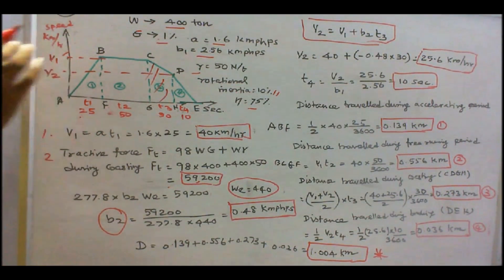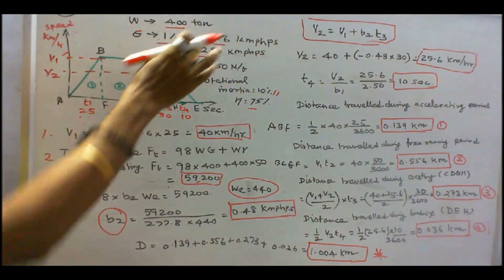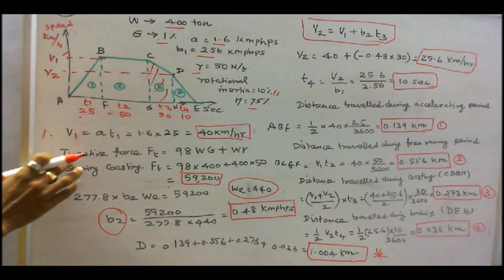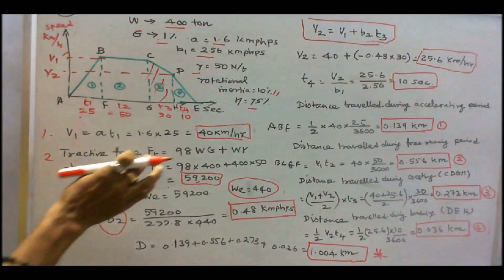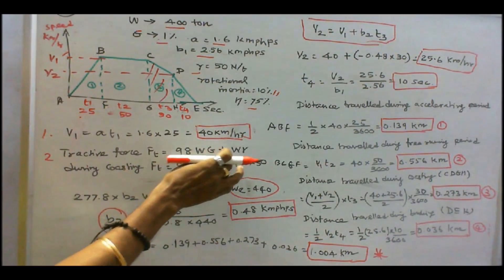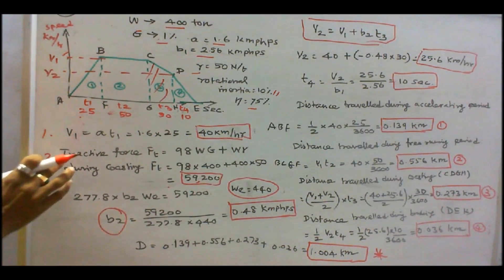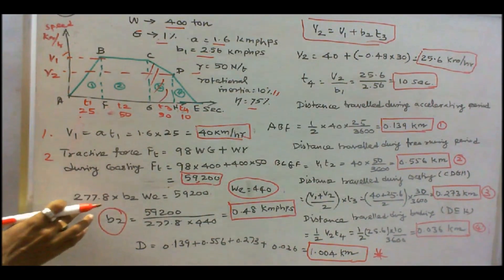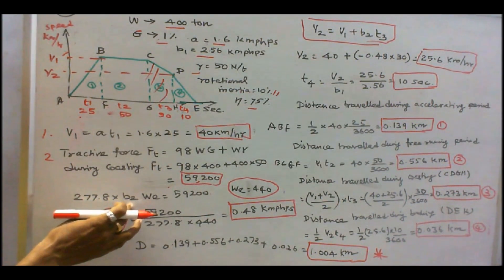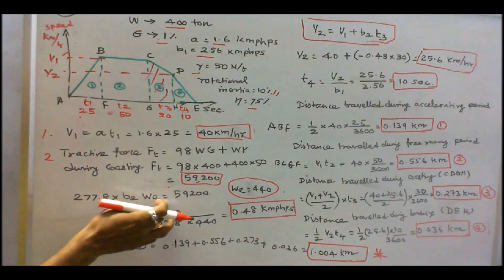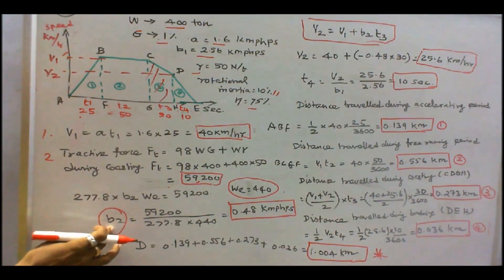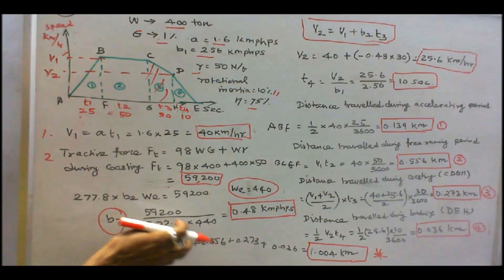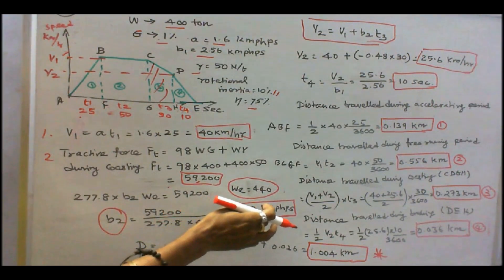V1 = A × T1 = 1.6 × 25 = 40 km per hour. Tractive force during coasting = 98 × W × G + W × R = 59,200 N. Setting this equal to 277.8 × B2 × accelerating weight: 277.8 × B2 × 440 = 59,200, giving coasting retardation B2 = 0.48 km per hour per second.